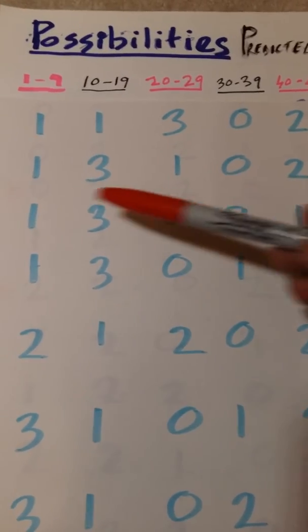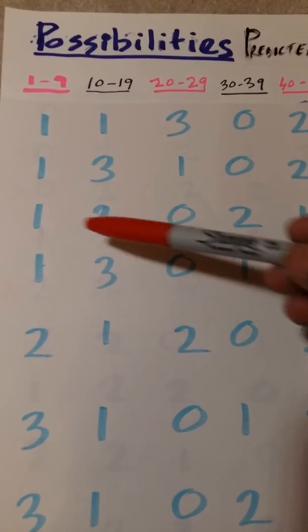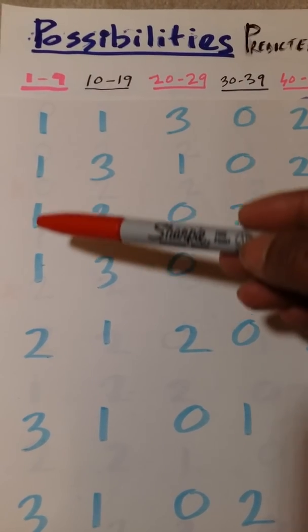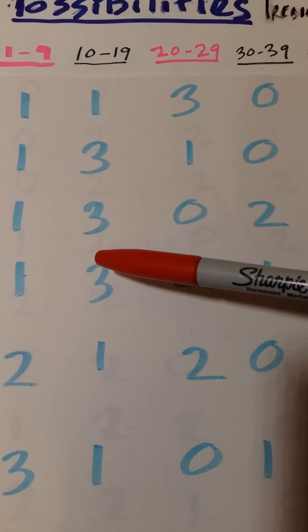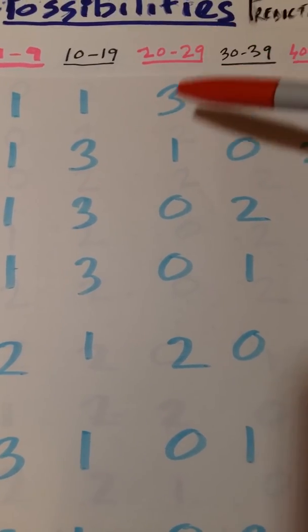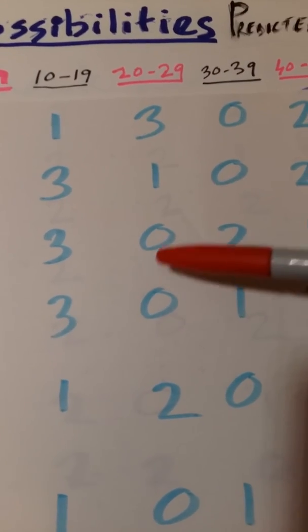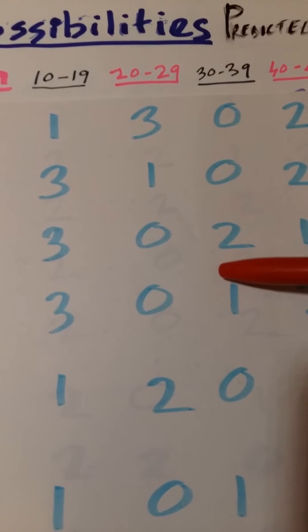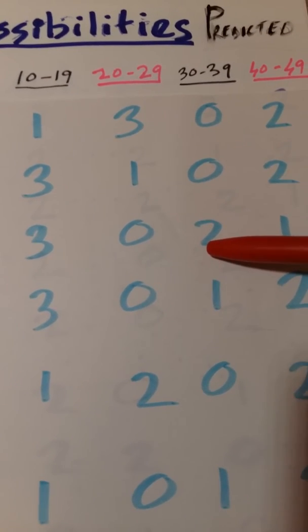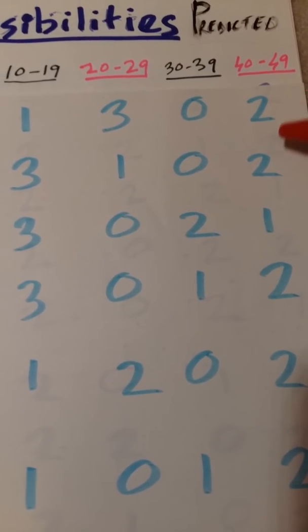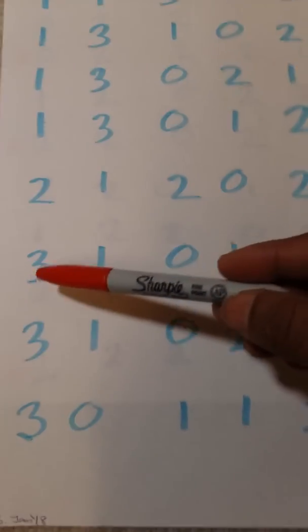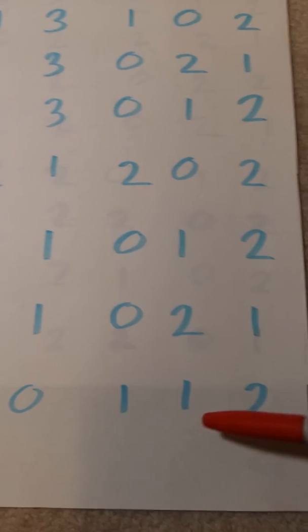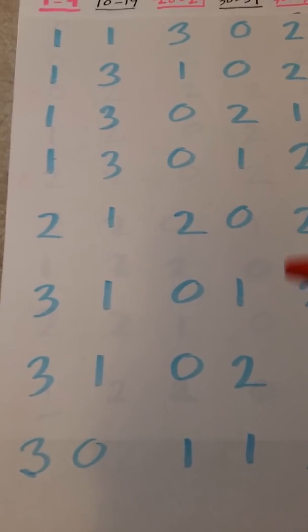One number from 1 to 9, three numbers from 10 to 19, no numbers from 20 to 29, two numbers from 30 to 39, one number from 40 to 49. Likewise, we expect one of these patterns.